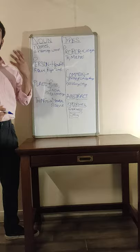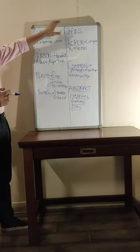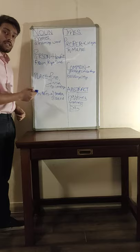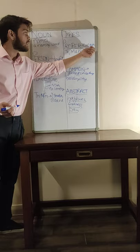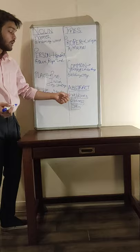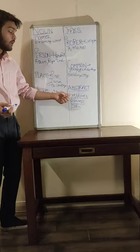So today, what have we covered? We have covered what a noun is — that it names a person, a place, or a thing — and the different types of nouns, which are proper nouns, naming something unique; common nouns, which name a group; and abstract nouns, like happiness, sadness, and pain, which we use to name things we cannot touch or see, but feel. Thank you.